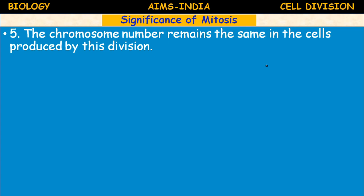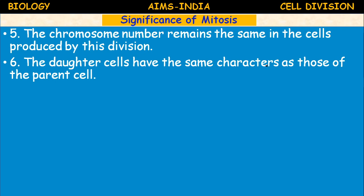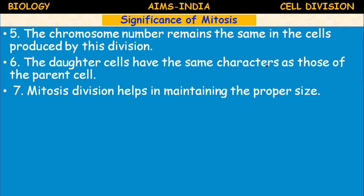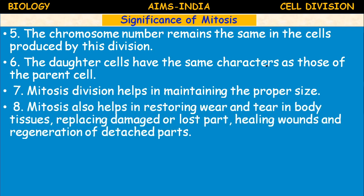The chromosome number remains the same in the cells produced by this division. The daughter cells have the same characters as those of the parent cell. Mitosis helps in maintaining the proper size of cells and also helps in restoring wear and tear in body tissues — replacing damaged or lost parts, healing of wounds, and regeneration of detached parts. In animals showing regeneration, such as a lizard regrowing its tail, mitosis division is involved.